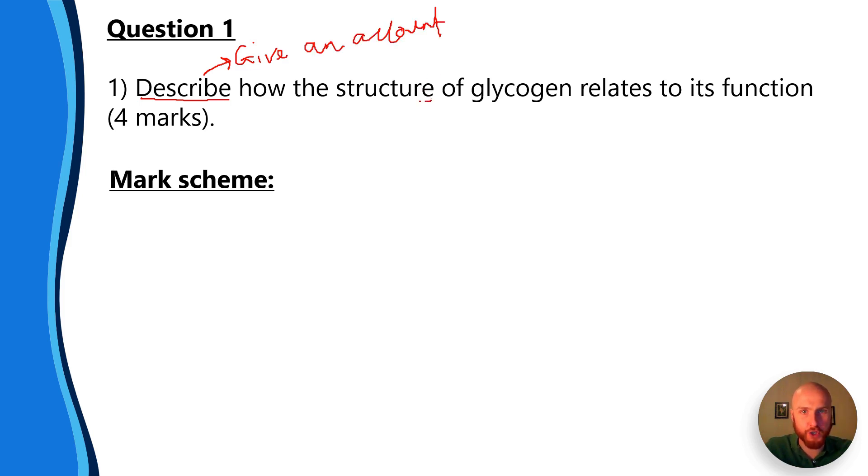The next thing I'm going to underline is the structure. So it's going to want us to talk about the structure of glycogen - what's it made up of, what's the chemical formula, is it branched, is it straight-chained, all of those different bits and pieces. And then we've got to relate it to its function. So it's worth four marks. We've got to talk about structure and function and give an account of how they link.